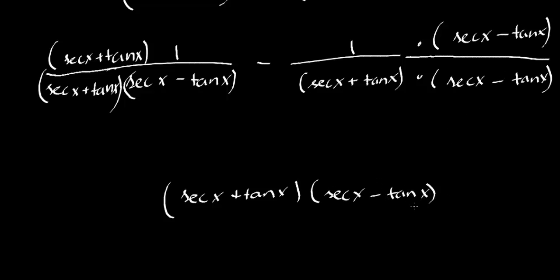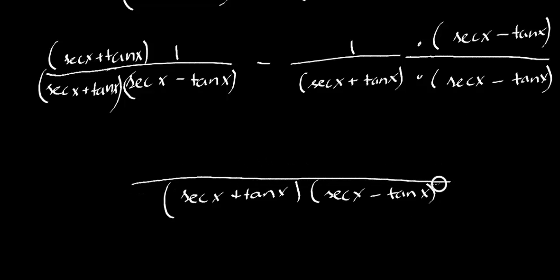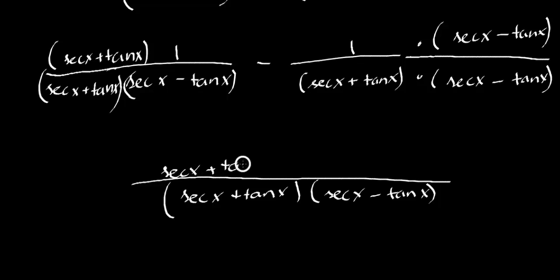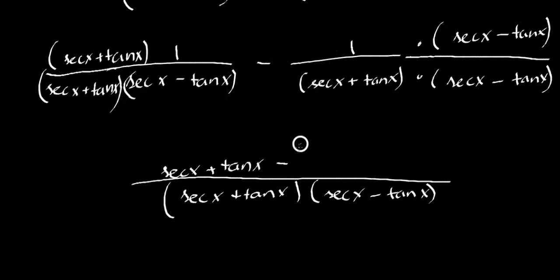All you've got to do is distribute. Obviously you get secant x plus tangent x. And you have this minus sign — never forget that. A lot of people get confused and forget about it, and it leads to major problems in their answers.